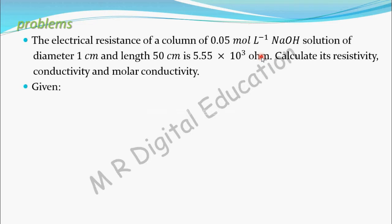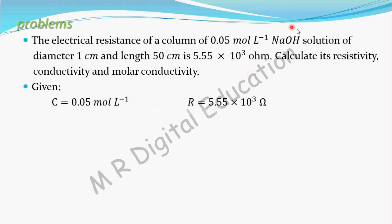We are given that the electrical resistance of a column containing 0.05 mol per liter NaOH solution has diameter 1 cm and length 50 cm. The electrical resistance is 5.55 into 10 to the power 3 ohm. Concentration of NaOH is 0.05 mol per liter, resistance is 5.55 into 10 to the power 3 ohm, and diameter is 1 cm, which converts to 1 into 10 to the power minus 2 meter.